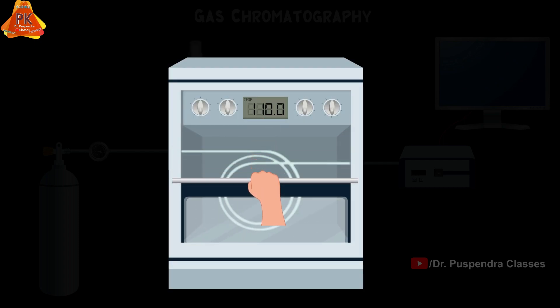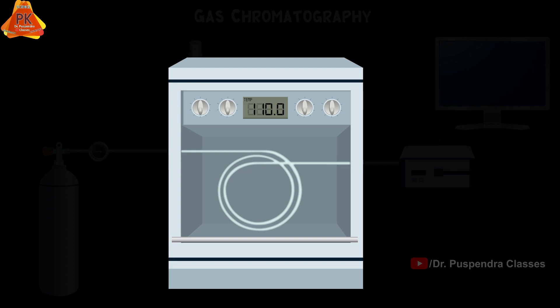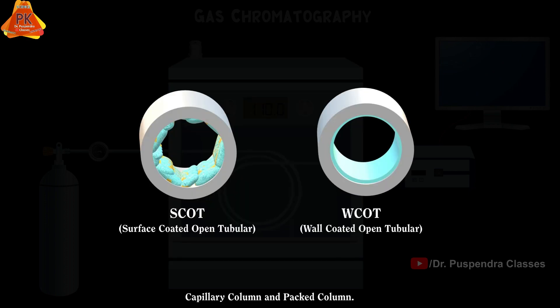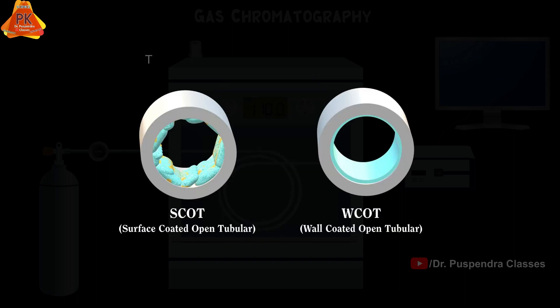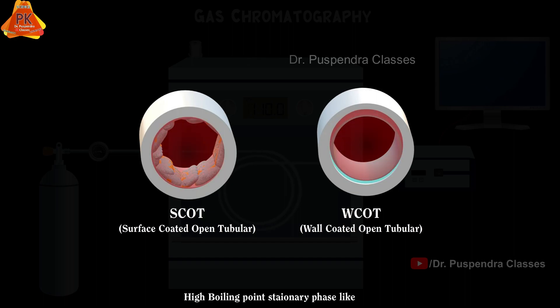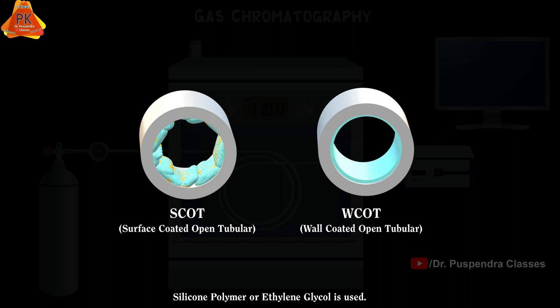The next part of the GC instrument is the GC column. Two major types of columns are available: first is capillary column and second is packed column. Generally, capillary column is used in GC with length of 1 to 300 meters. The internal wall of this capillary column is coated with high boiling point stationary phase like silicon polymer or ethylene glycol.